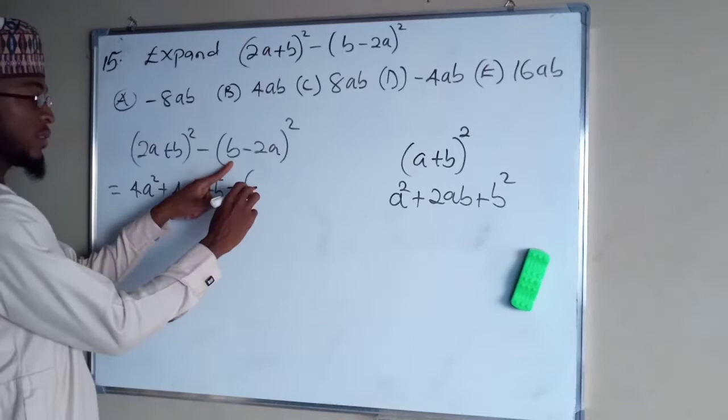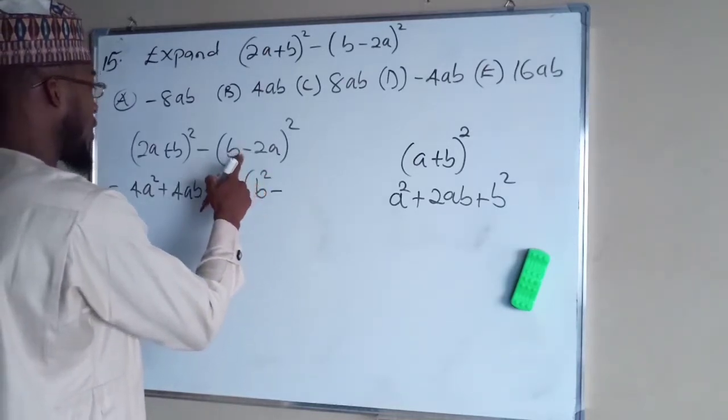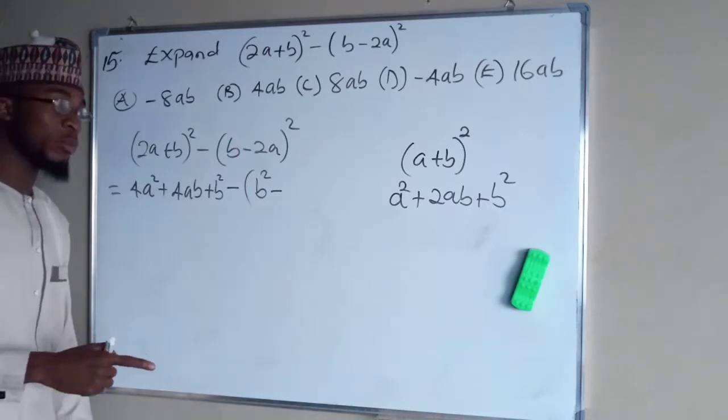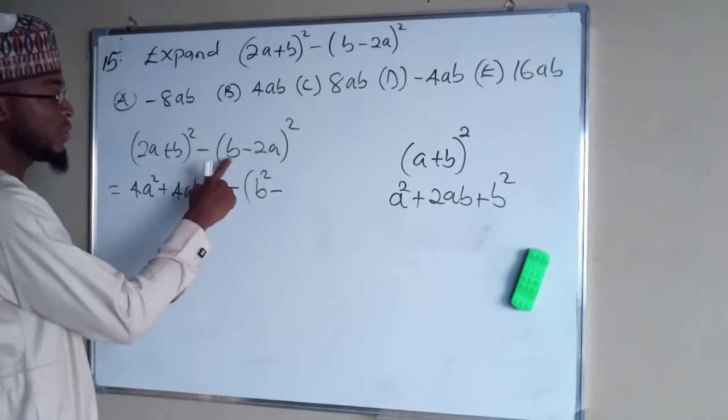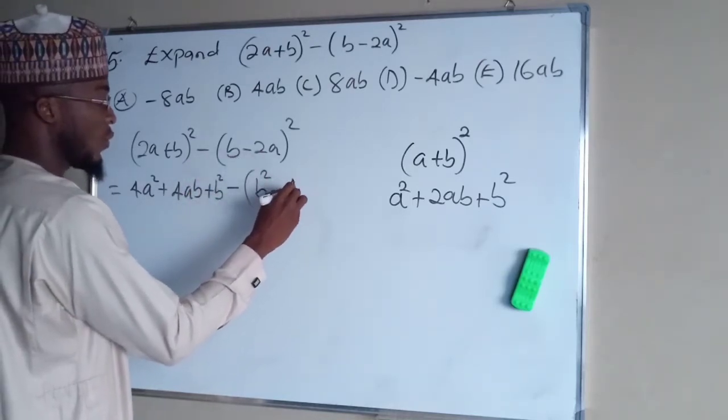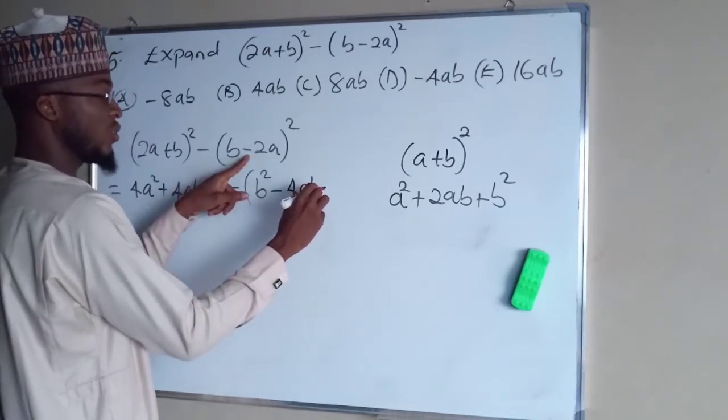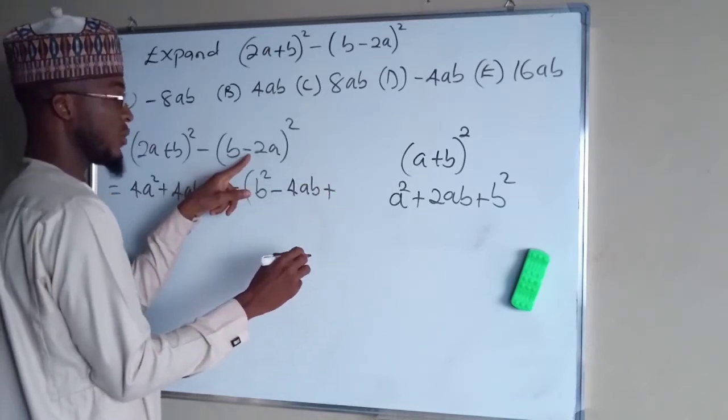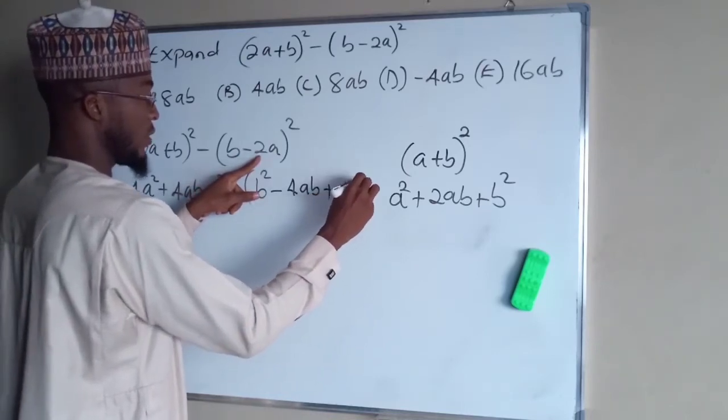You square this, you get b squared minus. This time around because minus is stronger than plus, so this plus becomes minus here because of this minus. 2 times this is 2b times this is 4ab. Then plus because we are going to square this, so it becomes plus 4a squared.